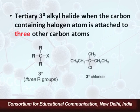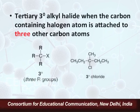A tertiary alkyl halide is one in which the carbon atom containing the halogen atom is attached to three other carbon atoms, that is, three alkyl groups. The example taken here is 3-methyl-3-chloropentane, where the halogen is attached to three alkyl groups — one methyl and two ethyl groups. Hence the carbon is a tertiary carbon, meaning the halogen is attached to a carbon directly bonded to three other carbons.